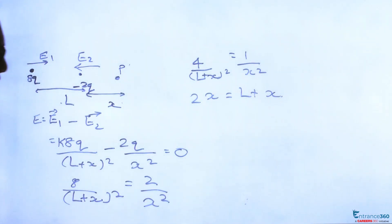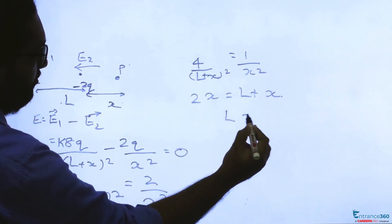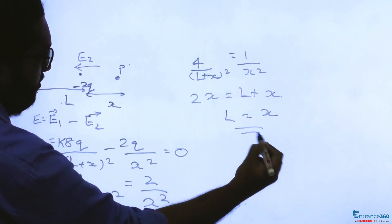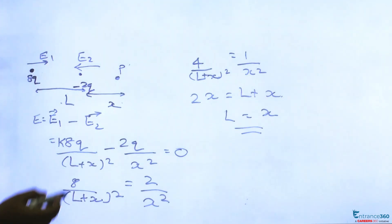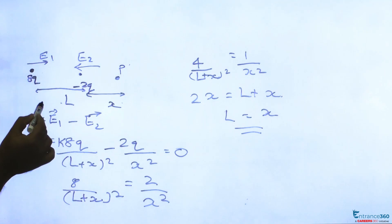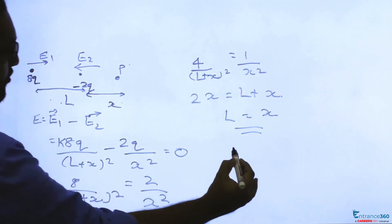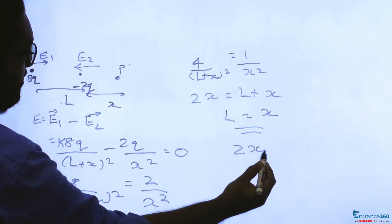So L equals x. We have to find the distance where electric field is zero. As L equals x, you will get x plus x, this equals 2x. So at a distance 2x.